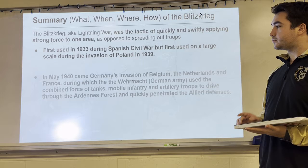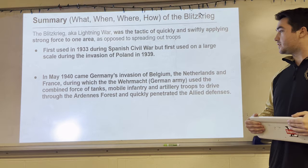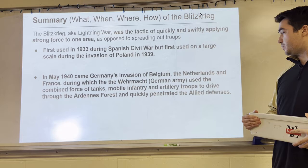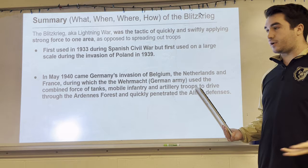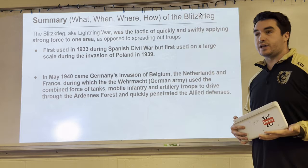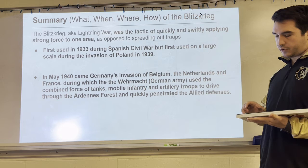In May 1940, Germany invaded Belgium, the Netherlands, and France. During that invasion, the German army used the combined force of tanks, mobile infantry — ground troops — and artillery, which fires large shells from a distance. They drove through the forest and quickly penetrated the Allied defenses in France. Hopefully we'll show you some pictures of artillery shells when we get back to school.